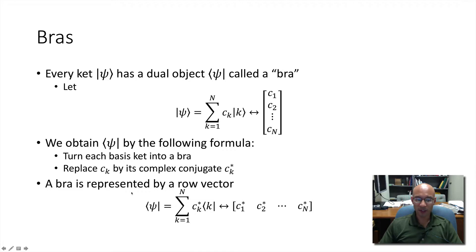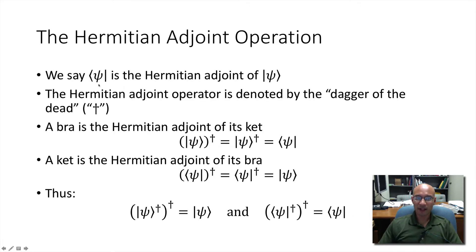Now, the bra takes this form, it's the dual of ket psi, and its representation is not a column vector, but rather a row vector. And we say that bra psi is the Hermitian adjoint of ket psi. The Hermitian adjoint operator is denoted by the dagger. And we write this like this. So here's ket psi, the dagger operator acts on it. We can write it without the parentheses. And we're saying that bra psi is the Hermitian adjoint of ket psi.